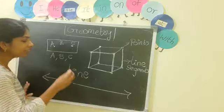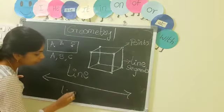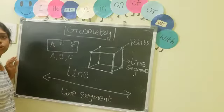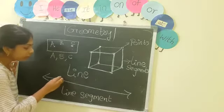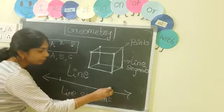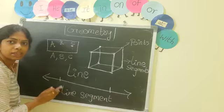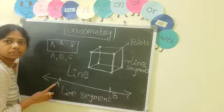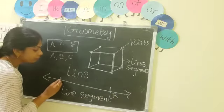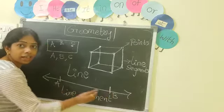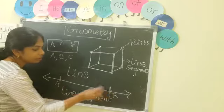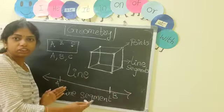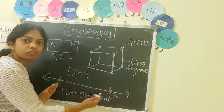Coming to line segment — spelling: S, E, G, M, E, N, T. Not like the line — the line segment has one starting point and one ending point. We denote it with capital letters. So this part from A to B is called a line segment. It is a part of the line. Remember, children: line segment is a part of the line.